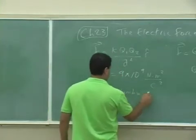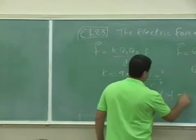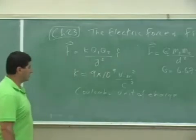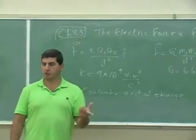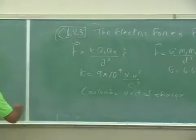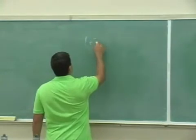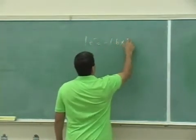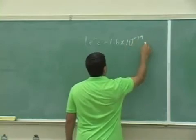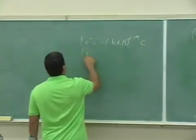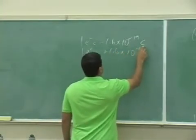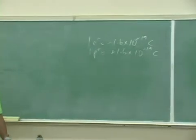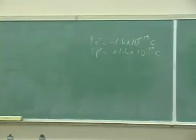Coulomb is the unit of charge. The charge of one electron is equal to the charge of one proton. One electron has a charge of negative 1.6 times 10 to the minus 19 Coulombs. And the one proton has a charge of plus 1.6 times 10 to the minus 19 Coulombs. So electron and the proton are oppositely charged.